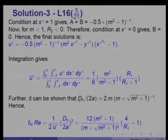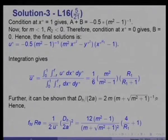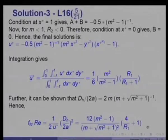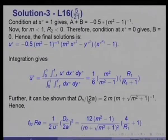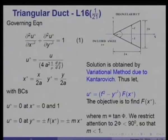Integration of u* gives ū* in terms of r₁. The hydraulic diameter for this triangle is dh = 2m · (m + √(m² + 1))⁻¹. Hence, the friction factor times Reynolds number f·Re is a function of m = tan φ and r₁, which is itself a function of m. After considerable mathematical manipulation, we have shown that the friction factor is a function of the included angle.